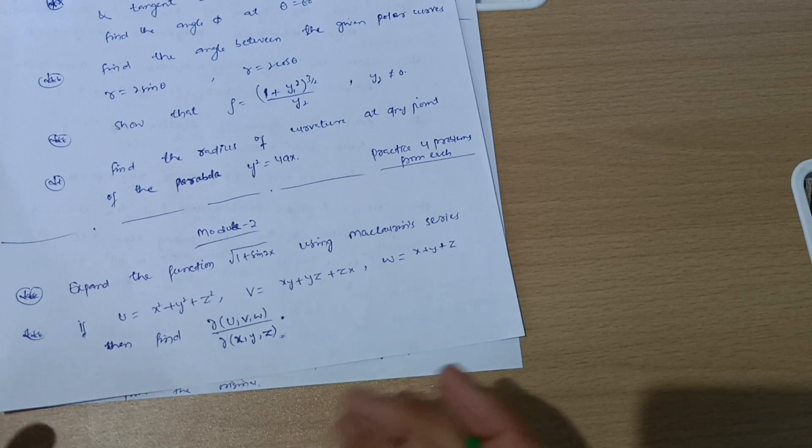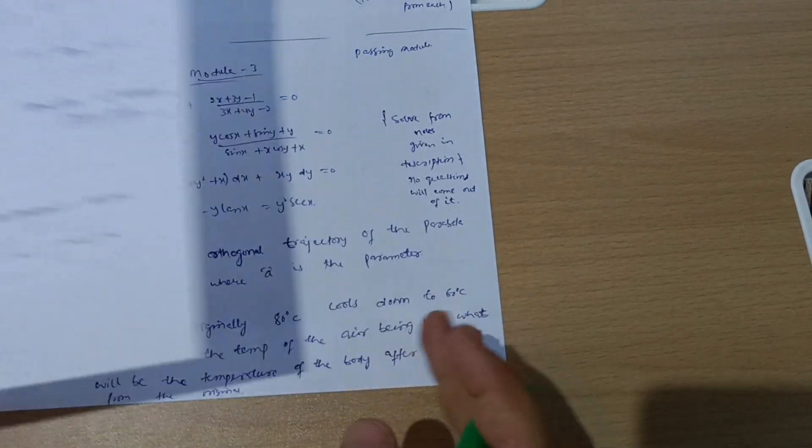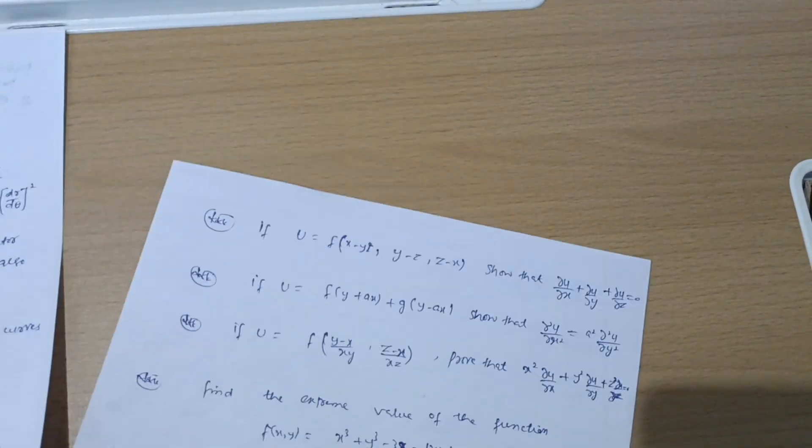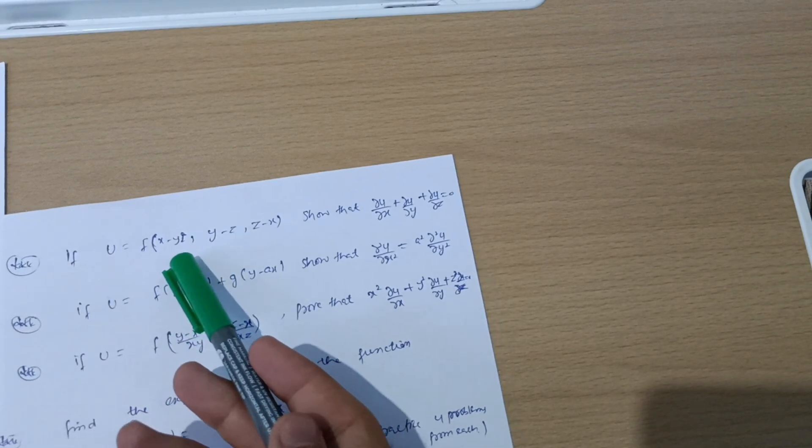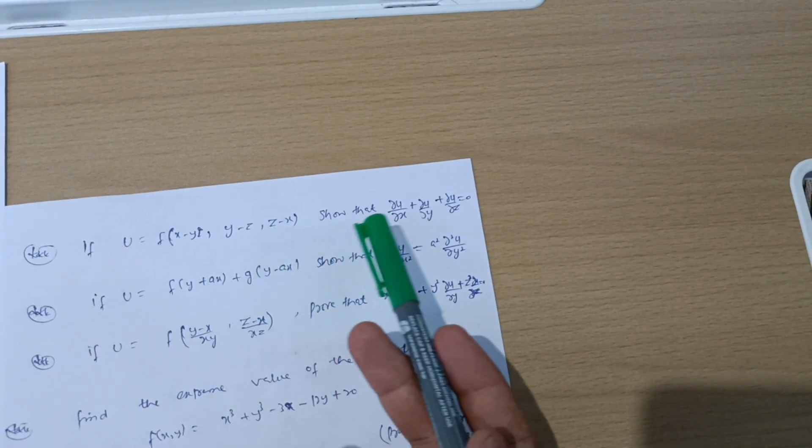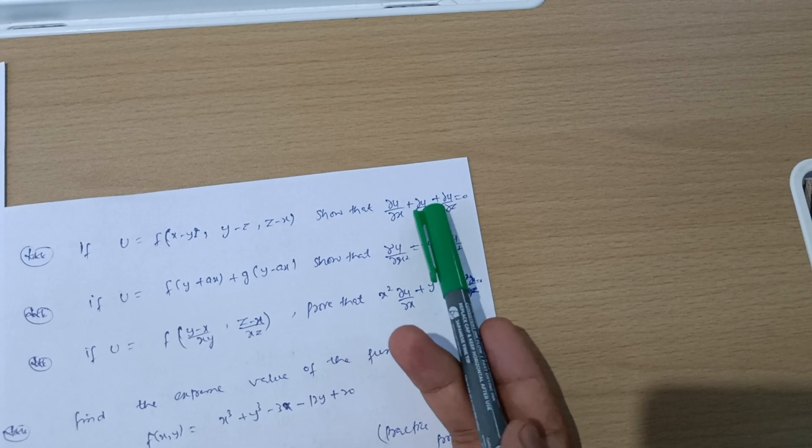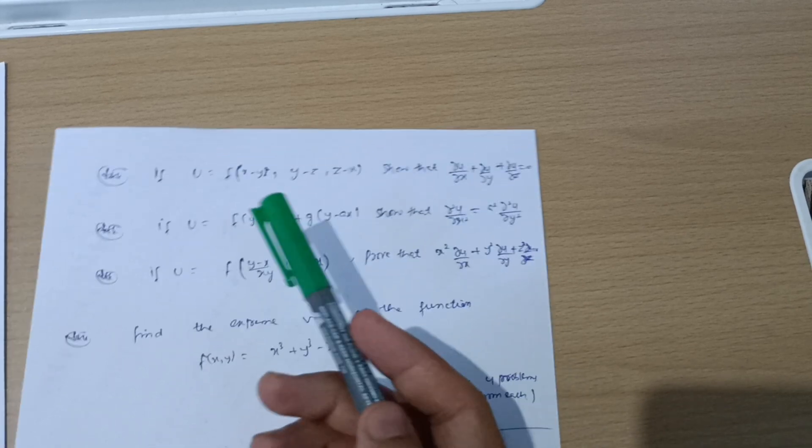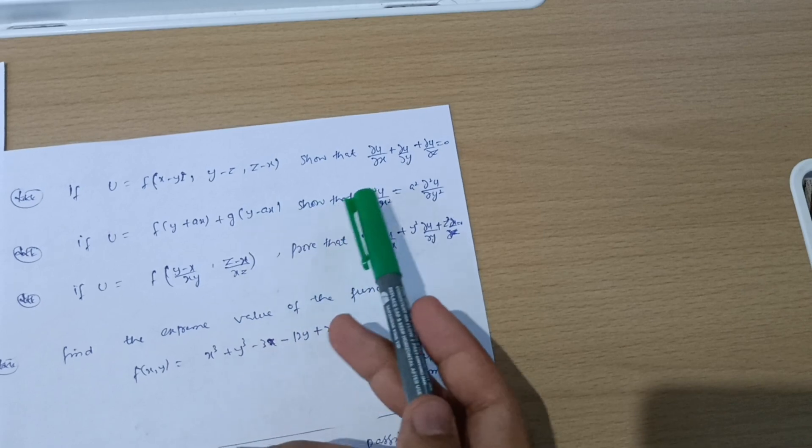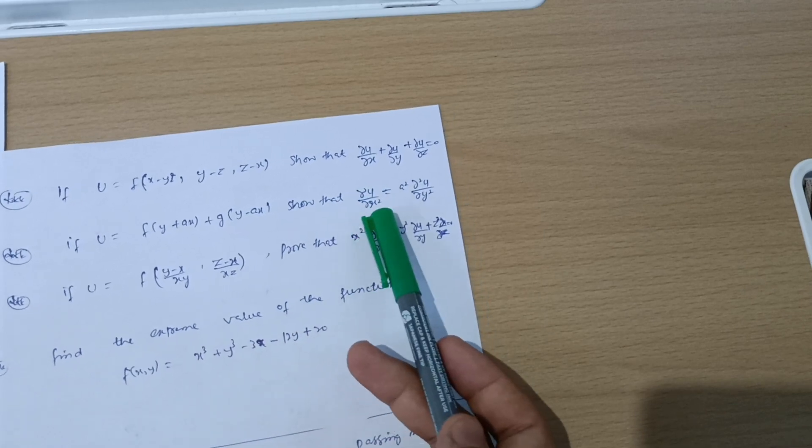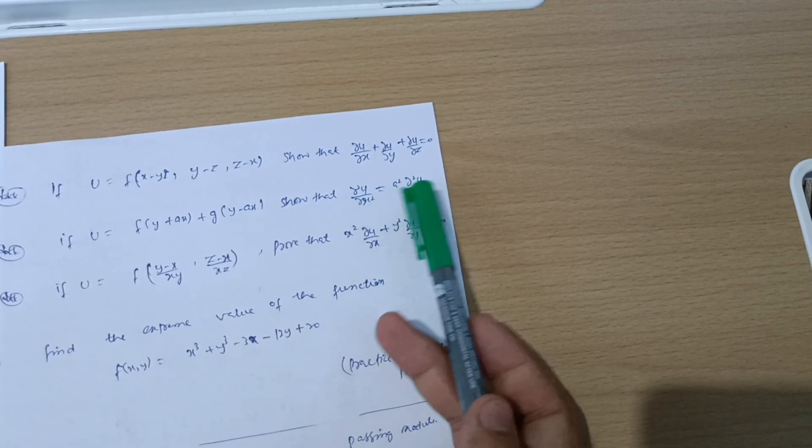Next we have questions from Jacobians. If u = f(x-y, y-z, z-x), show that ∂u/∂x + ∂u/∂y + ∂u/∂z = 0. If u = f(y+ax) + φ(y-ax), show that ∂²u/∂x² = a² ∂²u/∂y².